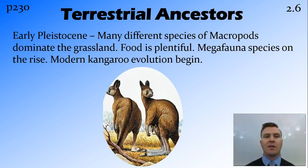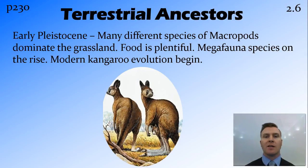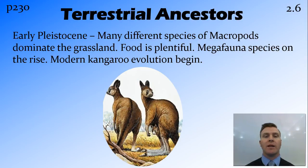Once we got into the Pleistocene, we had lots of different species of macropods dominating the savannah. Food was plentiful at this stage — the savannah spread again and with high rainfall there was lots of food. This meant that megafauna started to really pop up and dominate, mainly because there was so much food to support their large size. This is where the modern evolution of kangaroos started, with red kangaroos' modern evolution probably beginning about two million years ago.